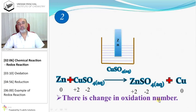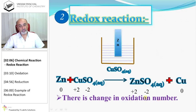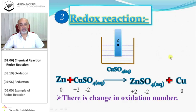If there is a change in oxidation number, one element will be oxidized and another element is reduced. It is called Reduction plus Oxidation — Redox Reaction.